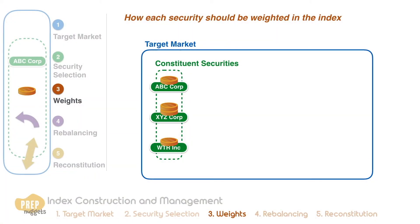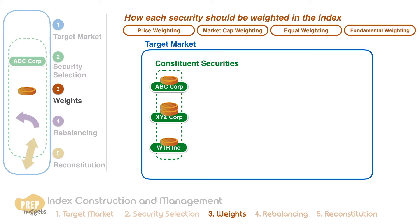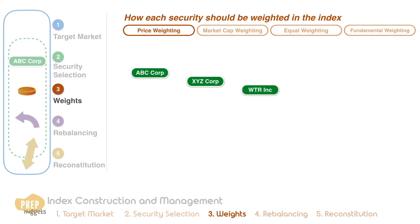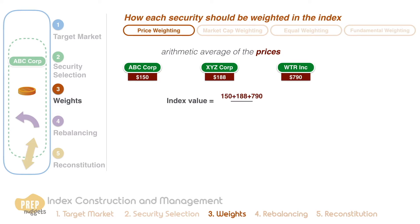Weighting schemes for stock indexes include price weighting, market capitalisation weighting, equal weighting and fundamental weighting. A price weighted index is simply an arithmetic average of the prices of the securities included in the index. We simply sum up all the market prices and divide it by the number of securities, giving us an index value of 376 points.